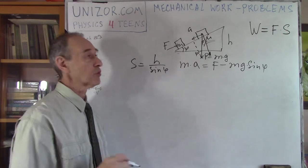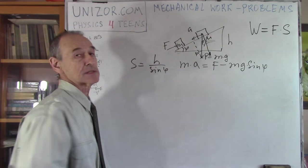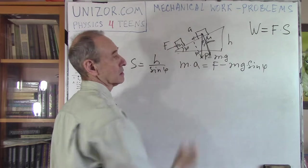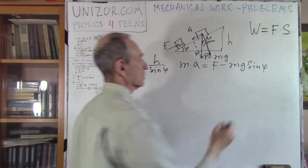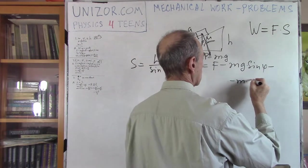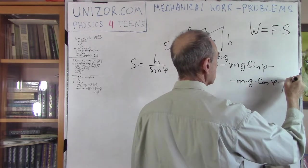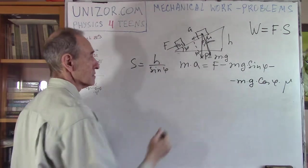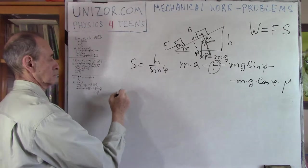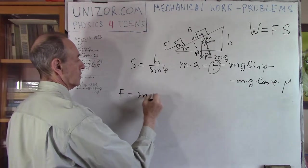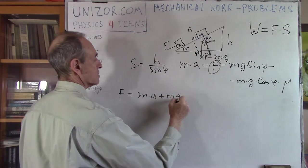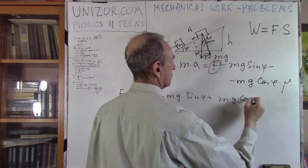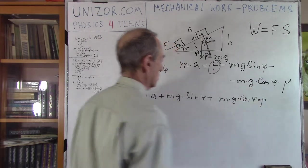Now, if this is phi, then this is phi, and this is phi. So, this is minus because it prevents, it goes to an opposite direction. Mg times sine of phi. And also preventing the motion, which means it's also going against the movement, is the friction force, which is this force times the coefficient of the friction. So, minus M times G times cosine of phi times mu. From this, we can find F.